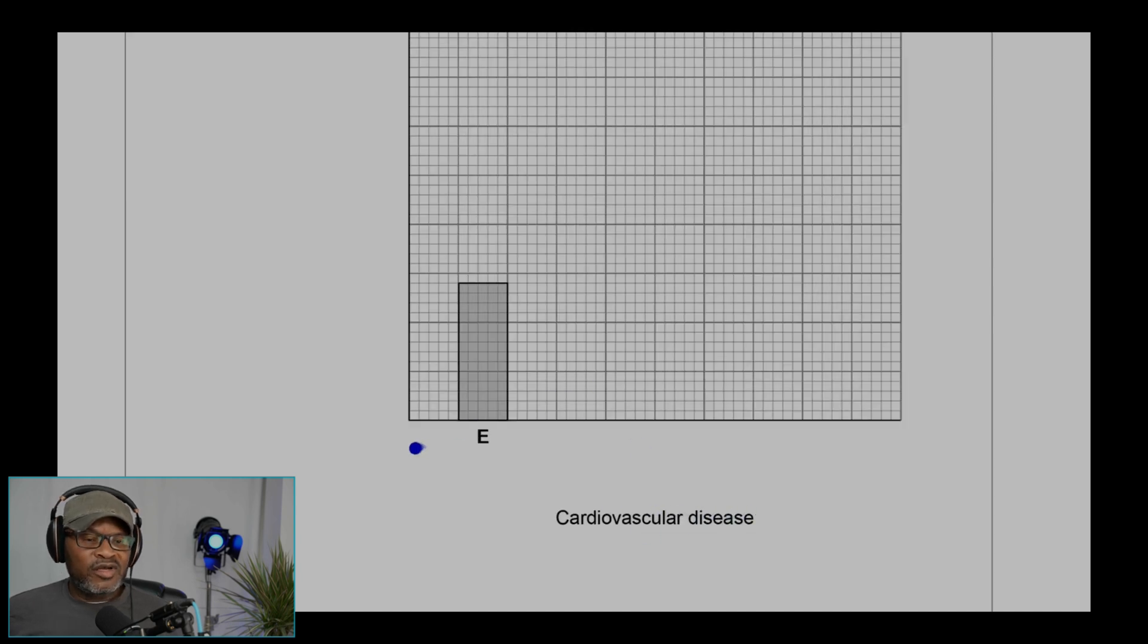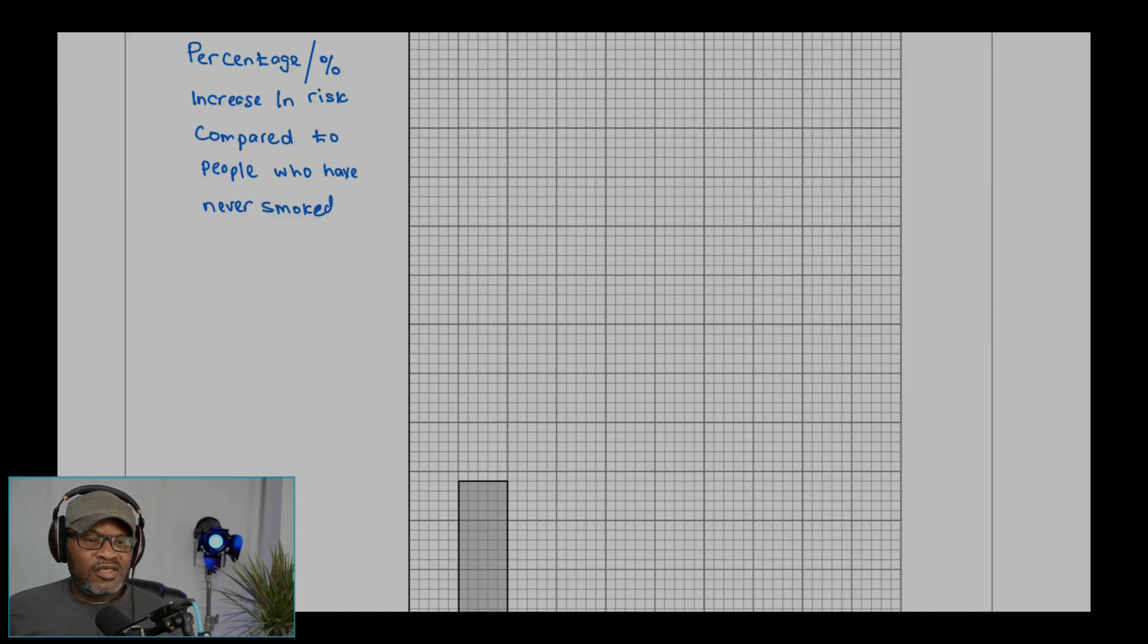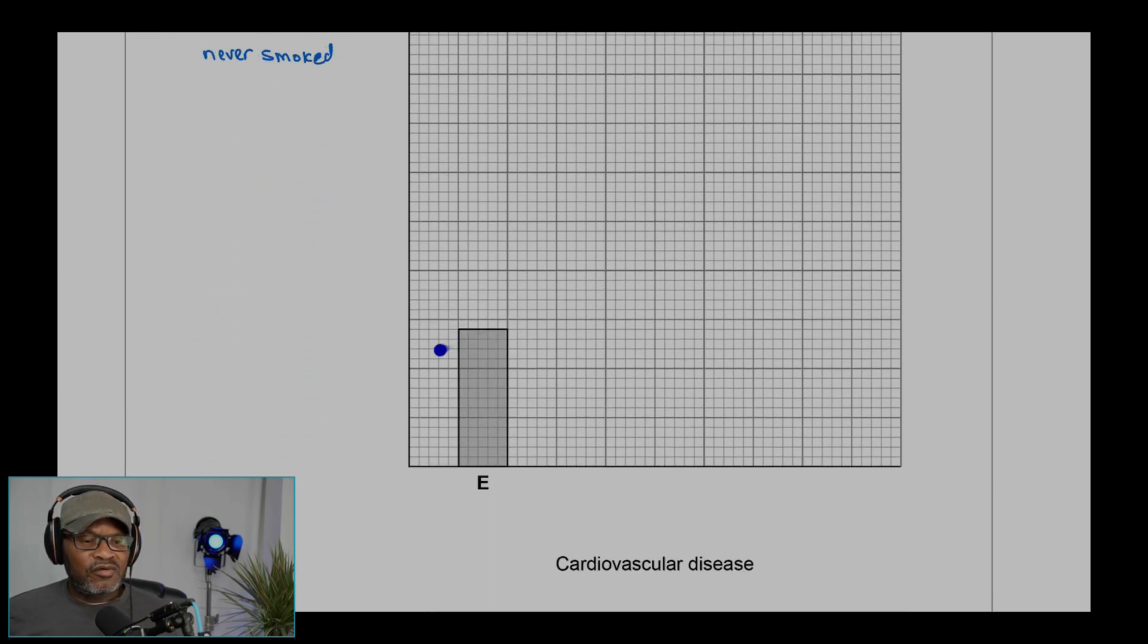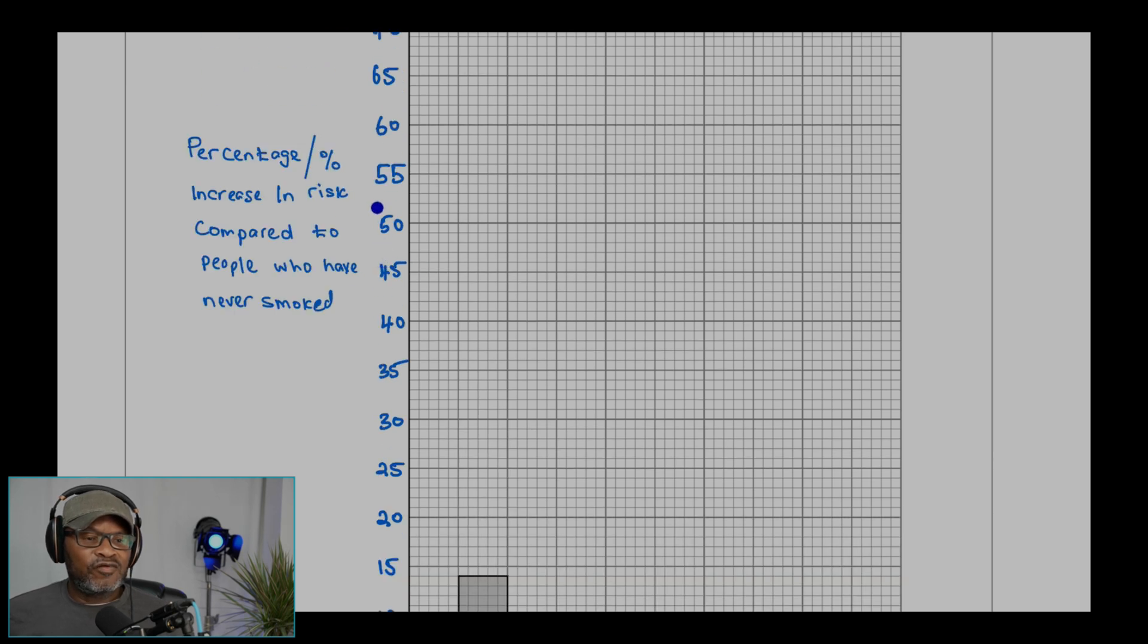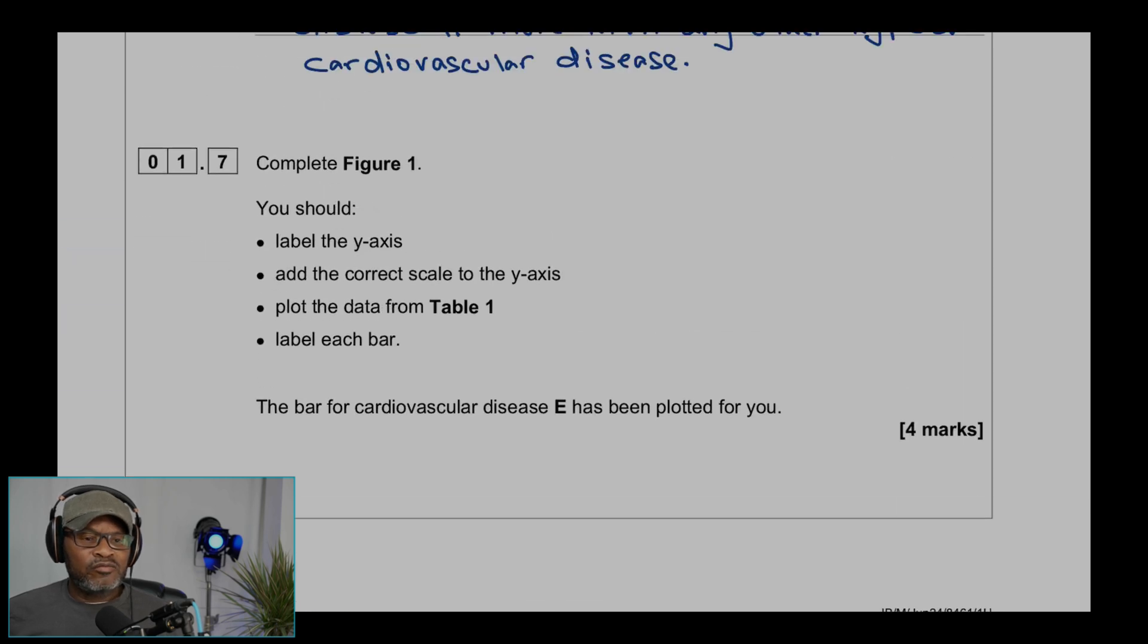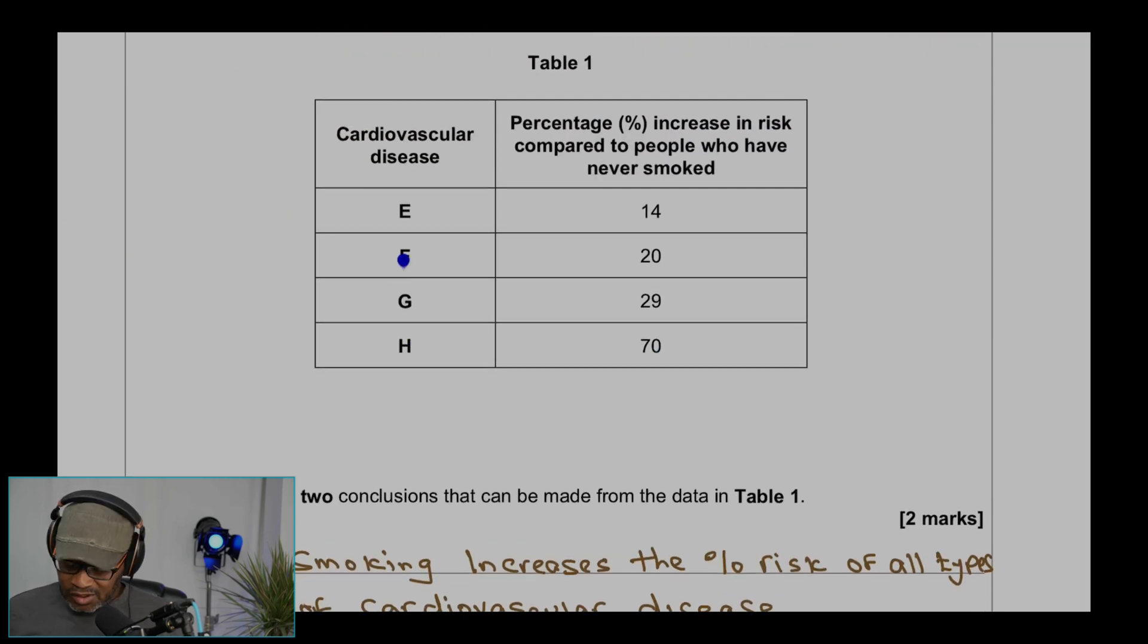Now looking at this table, E is 14, that's 14, so we expect that to be 14. If this is 14, that means that is 5, 10, 11, 12, 13, 14. So that's 14, that must be 15. Now we could label that 0, 5, 10, 15, 20, 25, 30, 35, 40, 45, 50, 55, 60, 65, 70, because we have the maximum 70 for H. F to be 20, G 29, H 70.